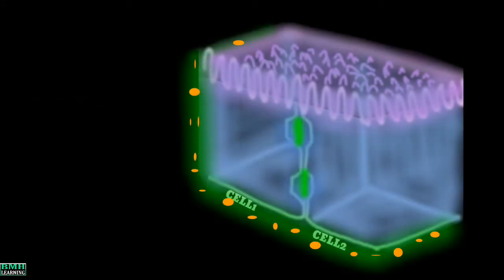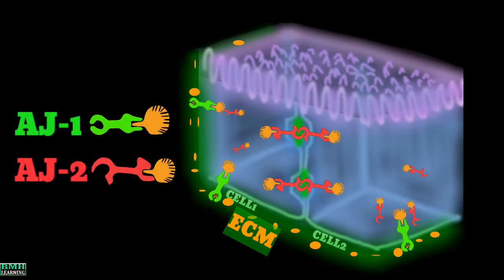We have two cells here and the cells are surrounded by extracellular matrix. Both of these cells possess two different types of anchoring junctions. These anchoring junctions allow the cell to interact in two ways.